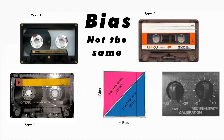You will have heard of high bias, standard bias, and metal bias. They're all different levels which are specific to the type of tape being used. If you've got a Type 2 tape, you do not bias it the same as a Type 1 tape. Most tapes are manufactured to a standard and are round about the same for each type.